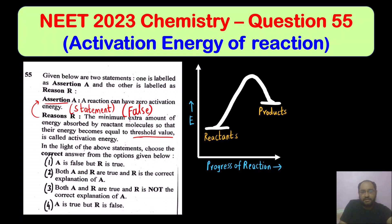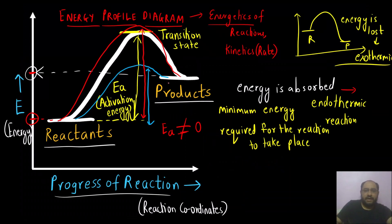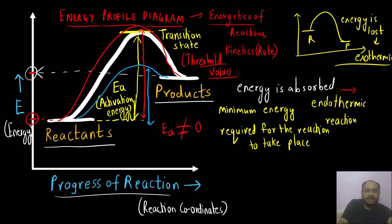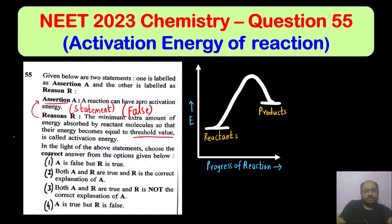The reason given is: the minimum extra amount of energy absorbed by the reactant molecules so that their energy becomes equal to the threshold value — which is the energy of the transition state. When the energy becomes exactly equal to that of the transition state, it can cross this transition state barrier and we get the products. So the reason is correct — it is the definition of activation energy. Therefore, assertion is false and reason is true.